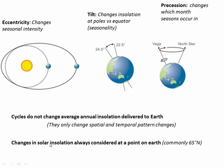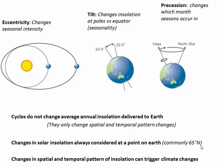We almost always consider insolation at a specific point on Earth because it does average out spatially, so we usually need to specify where we're talking about. In this case, we'll often talk about it in terms of roughly 65 degrees north latitude. The final point is that although the average annual insolation might be constant, the seasonal, spatial, and temporal changes can actually trigger pretty important climate changes.